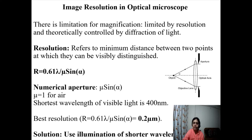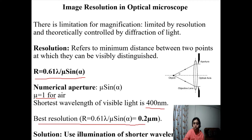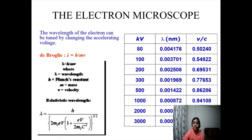The resolution formula is R = 0.61λ / (μ sin α). For air, μ = 1. Taking visible light at 400 nanometers, the best resolution with an optical microscope is about 0.2 microns. However, if we have features in our sample smaller than 0.2 microns, they won't be resolved with an optical microscope. We need to bring down the wavelength λ — by shifting from light to electrons.